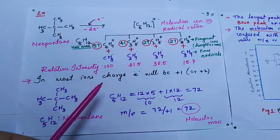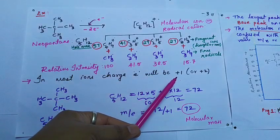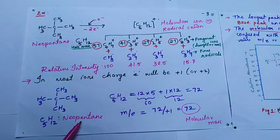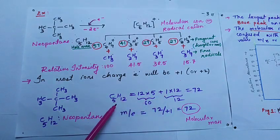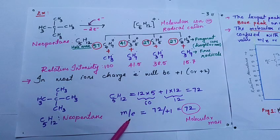In most ions, charge e will be +1. If you calculate the molecular mass of neopentane, it is 72. The m/e ratio is calculated as: m is 72, that is the molecular mass of neopentane, e is +1, which equals 72, the molecular mass itself.